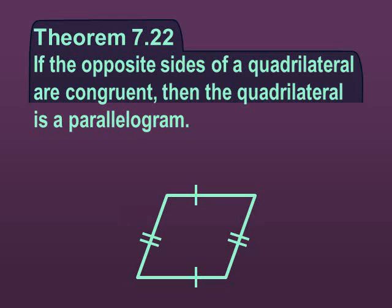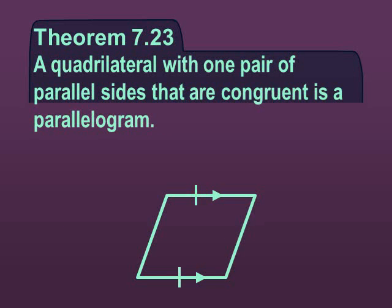So it's the opposite of theorem 7.15. The opposite sides of a parallelogram are congruent. This one's saying if we have them congruent, then we have a parallelogram. So instead of making a biconditional statement for a theorem, they're just separate. A quadrilateral with one pair of parallel sides that are congruent is a parallelogram.